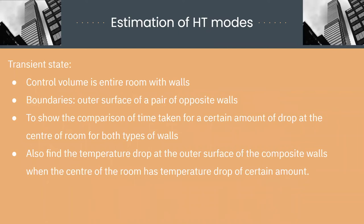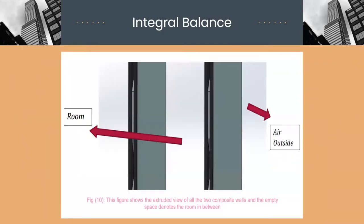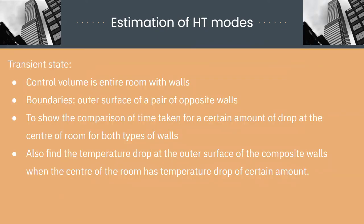For transient state, our control volume is the entire room along with the walls without the surfaces of a pair of opposite walls as the boundaries. We have transient conduction inside control volume and convection outside. In this problem, we are interested to show comparison of time taken for certain amount of temperature drop at the center of the room. Also, we are interested to find temperature drop at the outer surface of composite walls when the center of the room has temperature drop of certain amount.